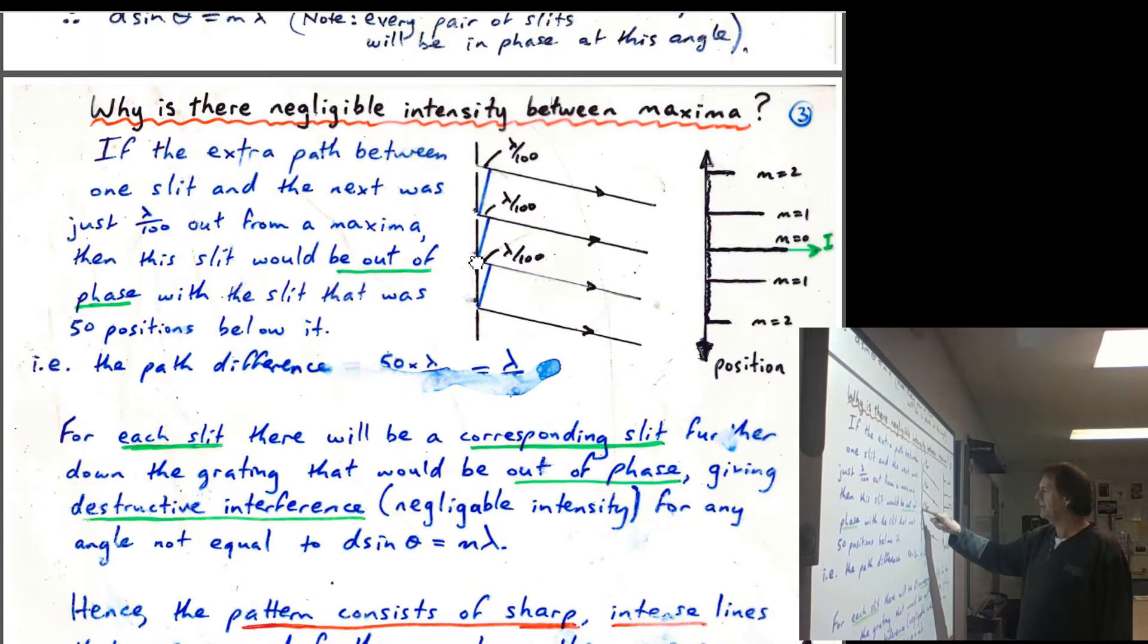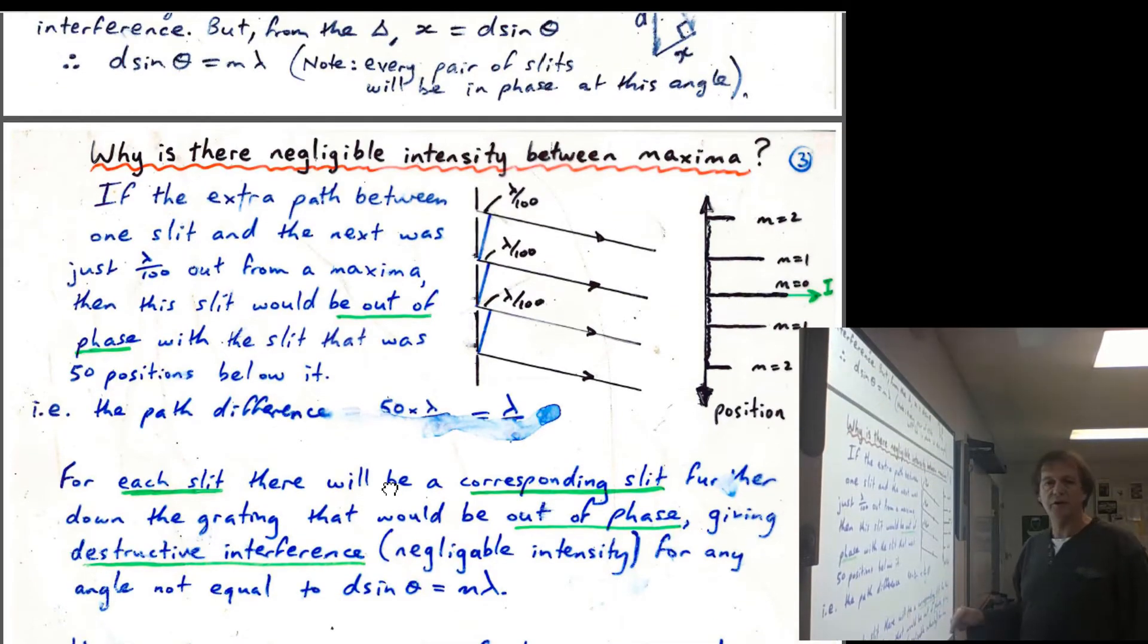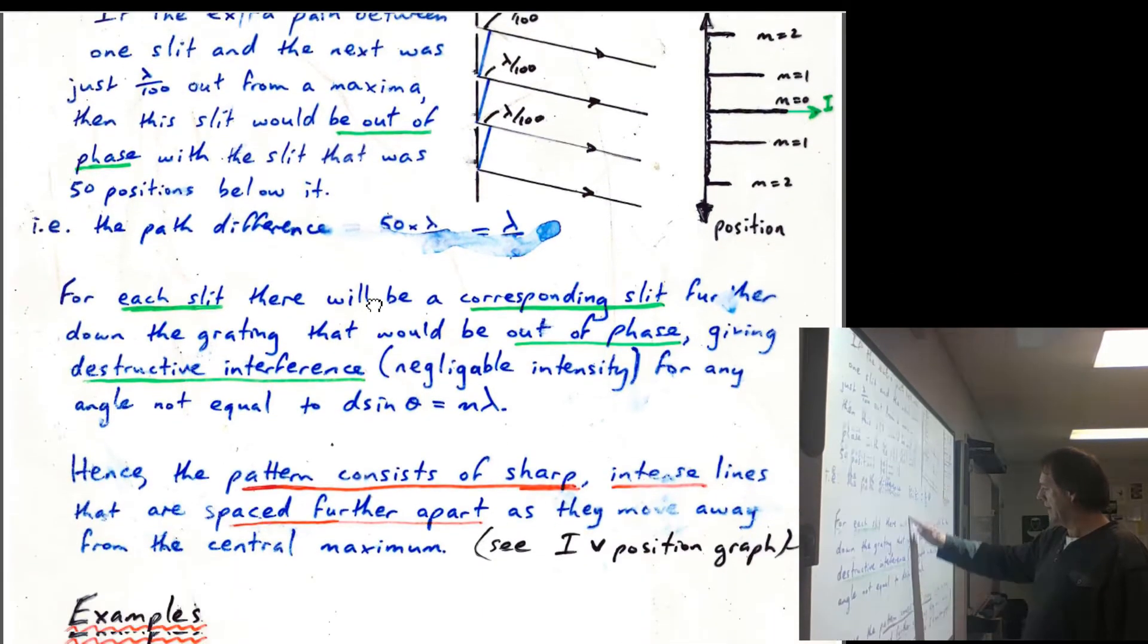Don't forget that the path difference here is very small because the distance between the slits is very small. So you have to go to quite a long angle to get that path difference to be big enough to get to your first wavelength of path difference, which is why those angles are further out than a double slit one.